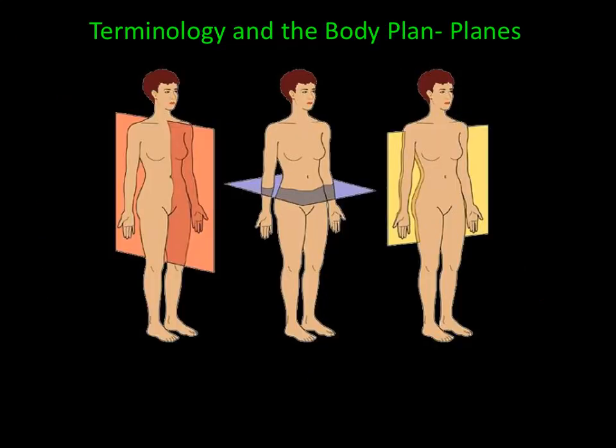Body planes are imaginary planes that dissect the human body in order to describe certain regions or sections of the body, or to describe the direction of body movements. There are three body planes in the human body. The first body plane divides the human body into right and left segments or sections — this is called the sagittal plane. The second body plane divides the body into superior and inferior sections — this is called the transverse plane.